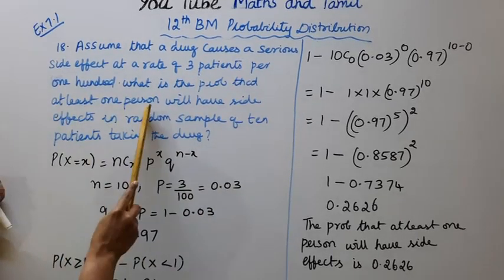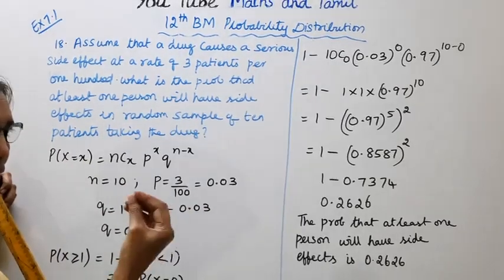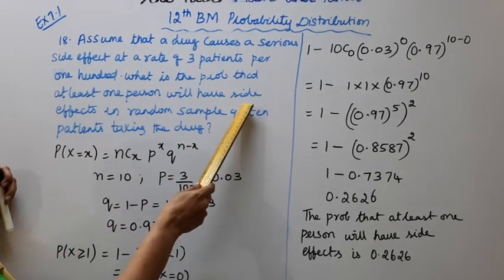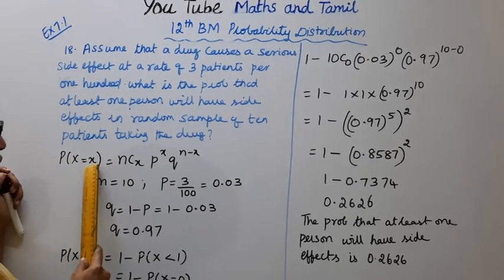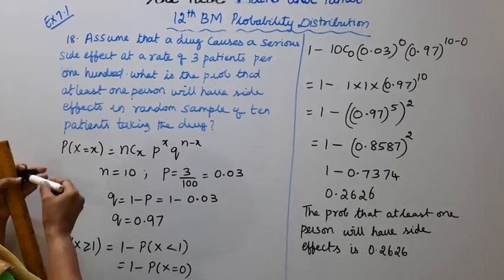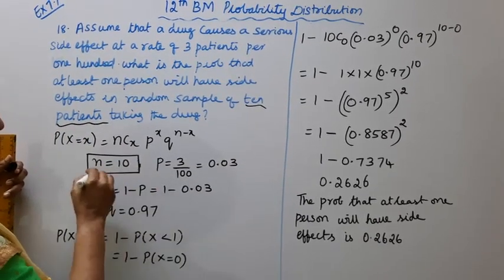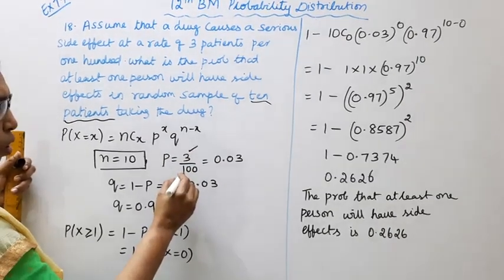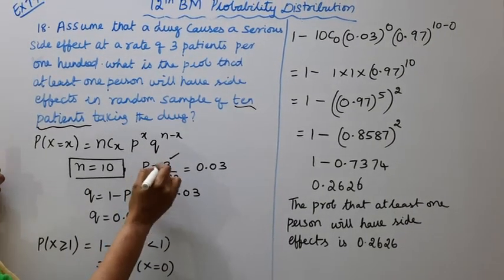At least one person will have side effect in random sample of 10 patients. After n is the 10, p is the 3 patient side effect out of 100 patients.